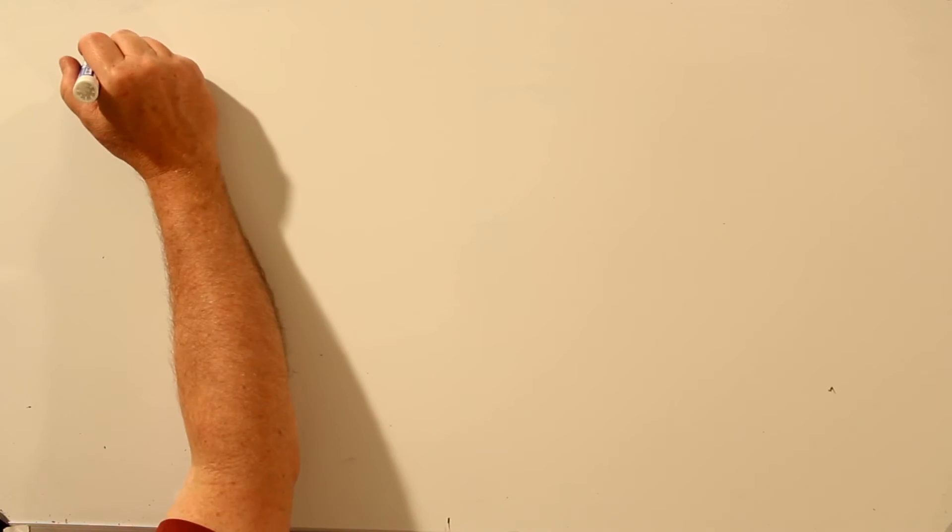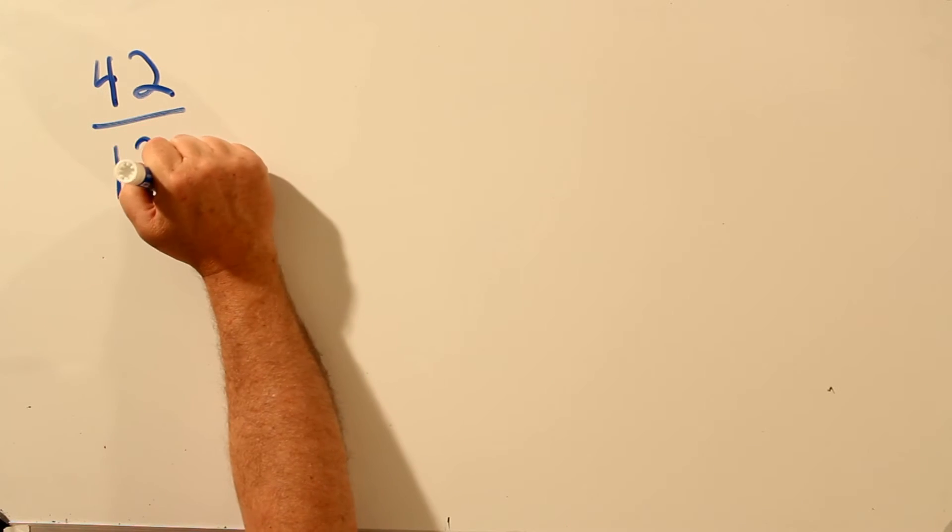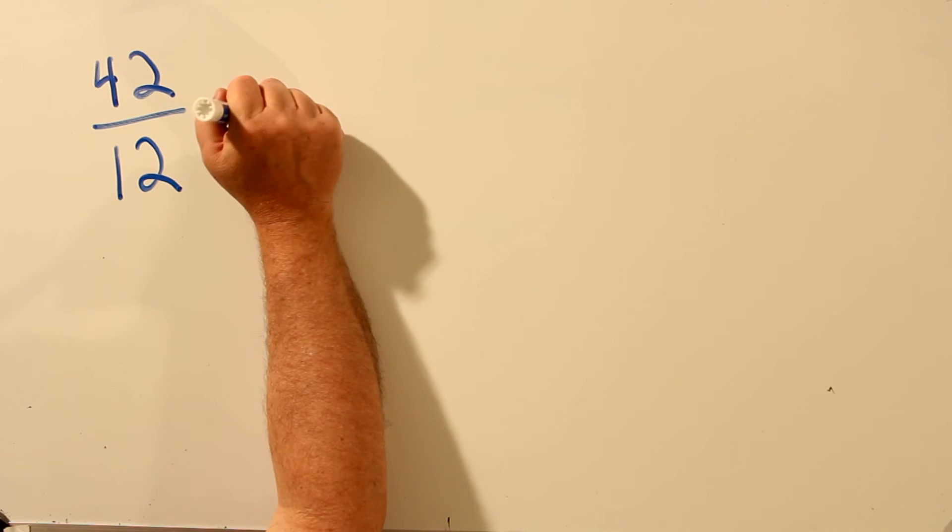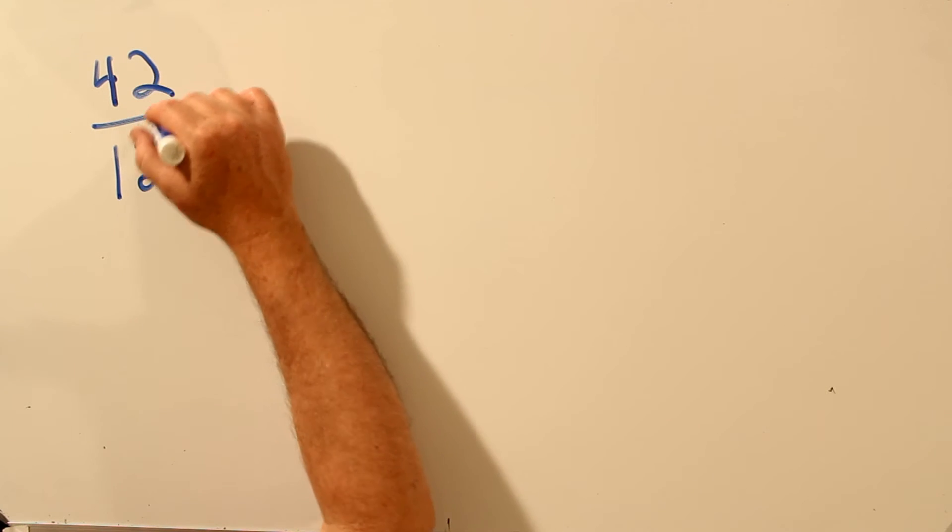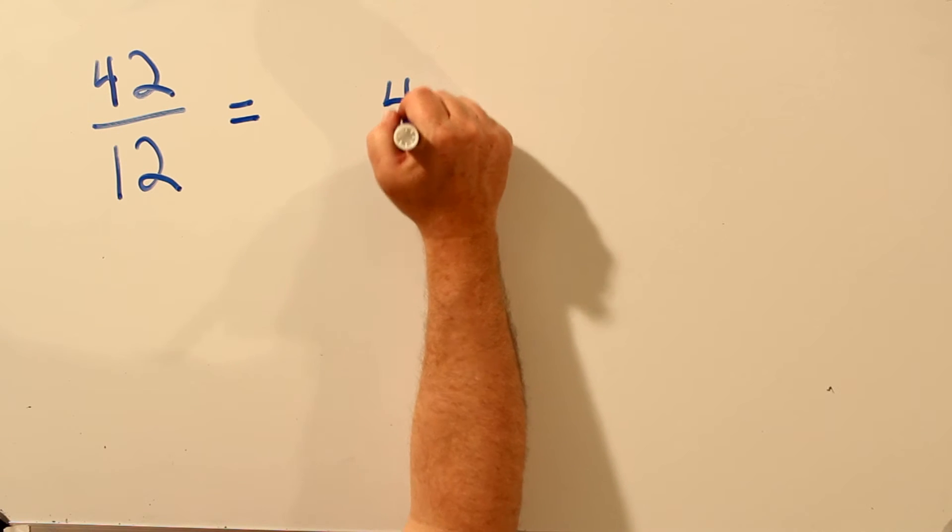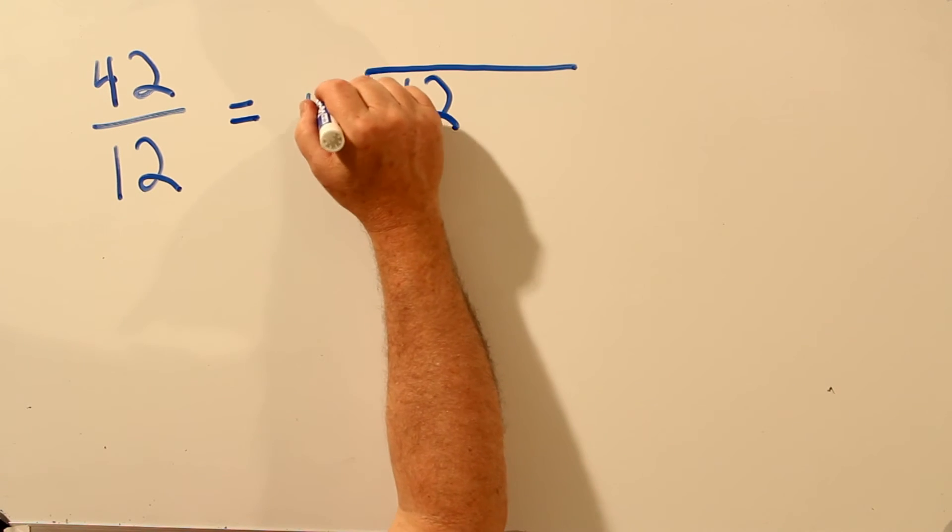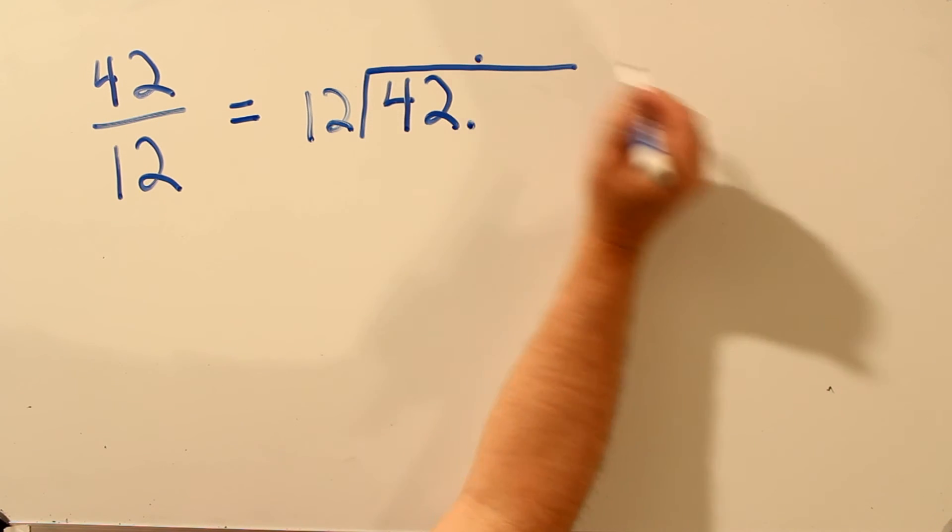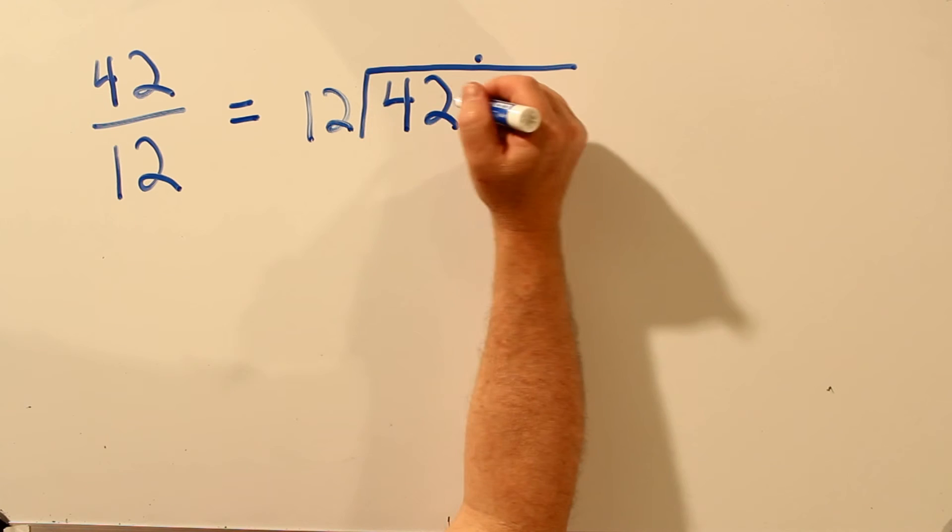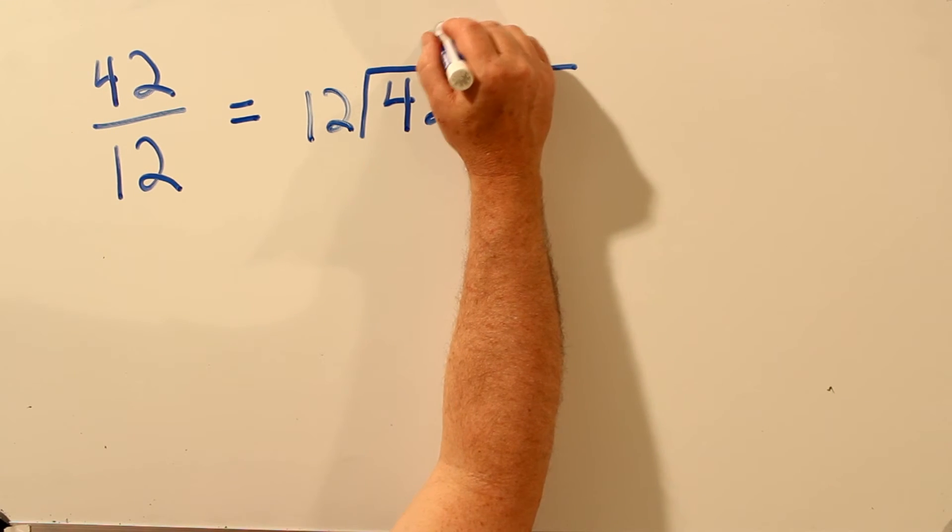Let's do one more. 42 over 12, written as a decimal. Well, 42 over 12, 42 divided by 12. Decimal point. 12 does go into 42, so the number will be greater than 1. 12 into 42 goes three times.